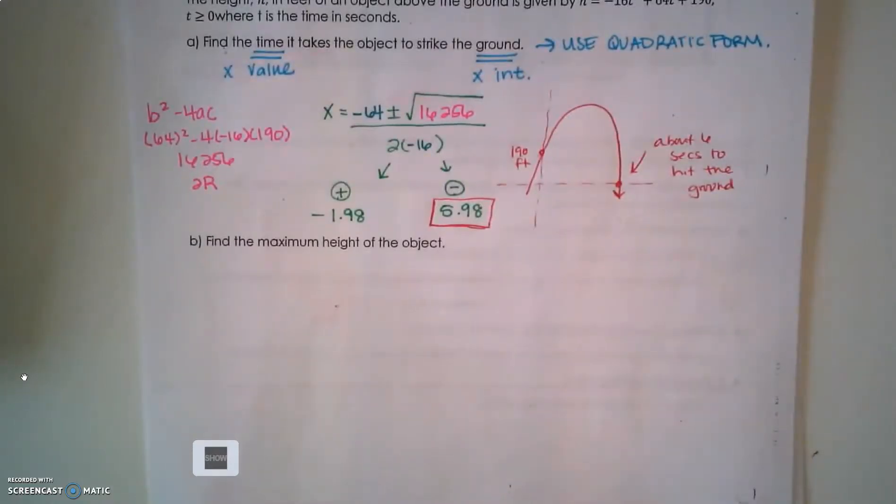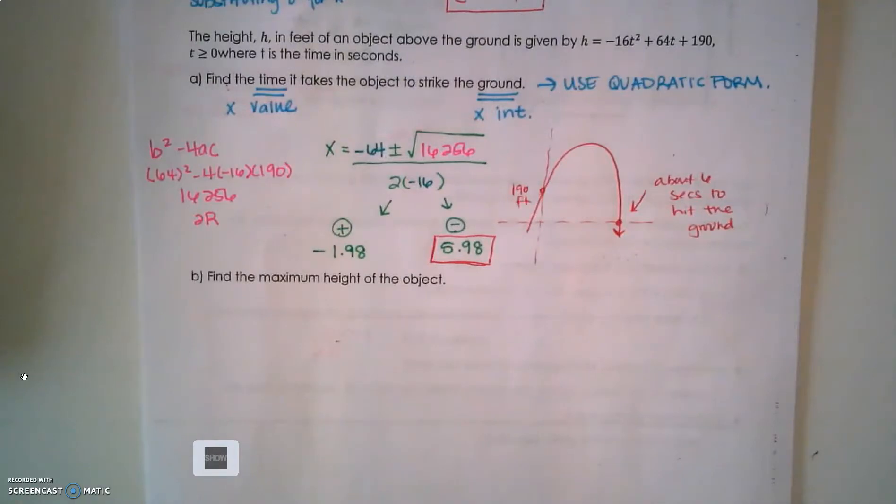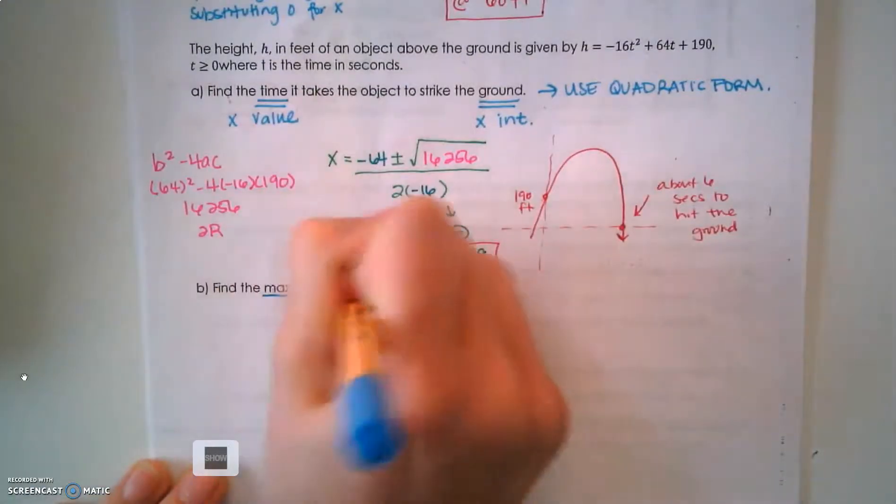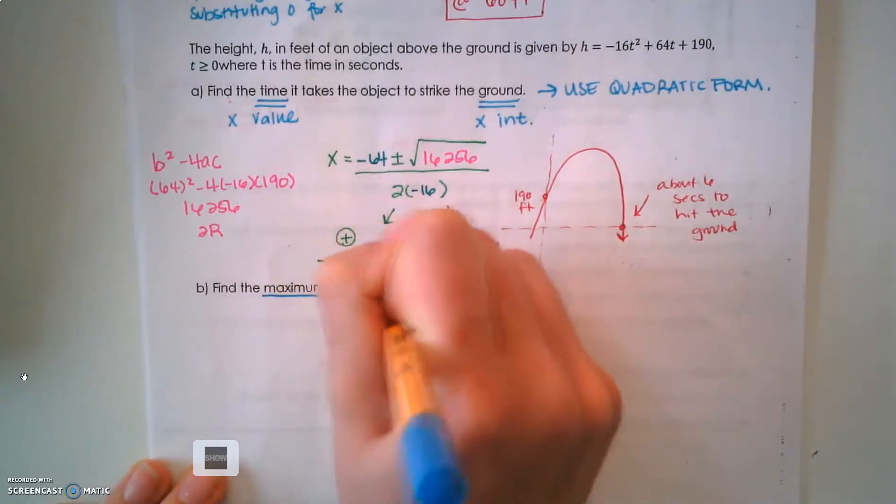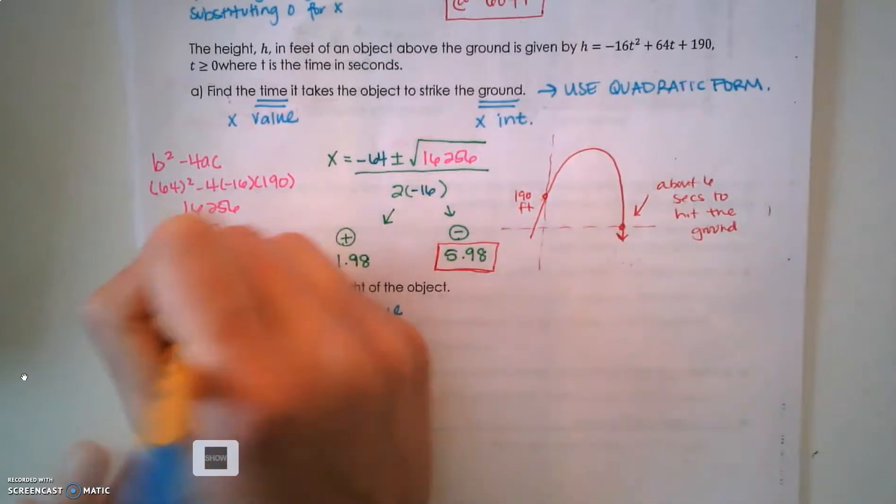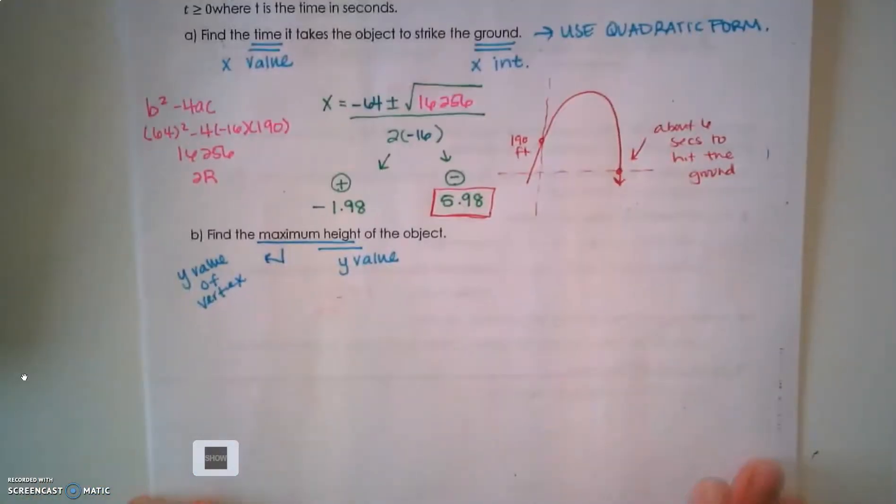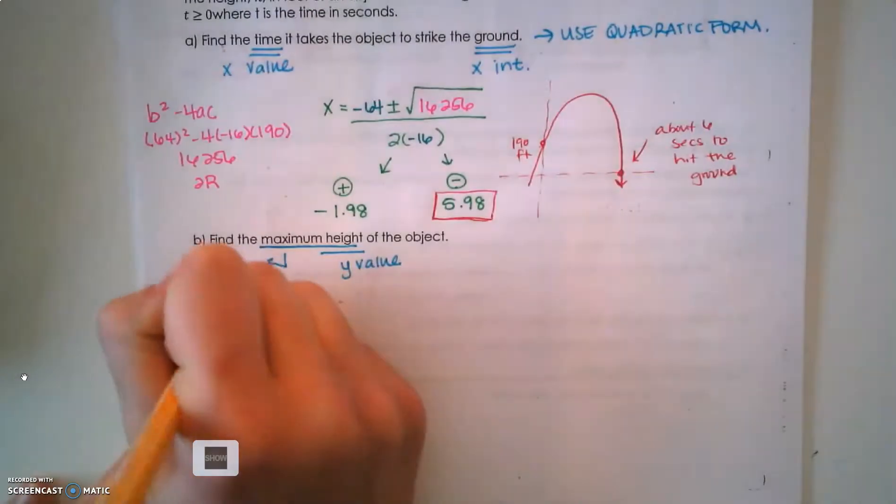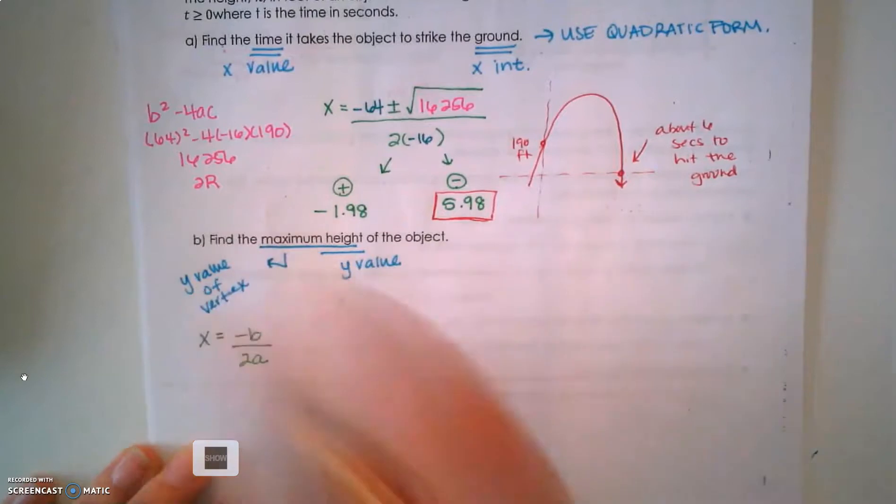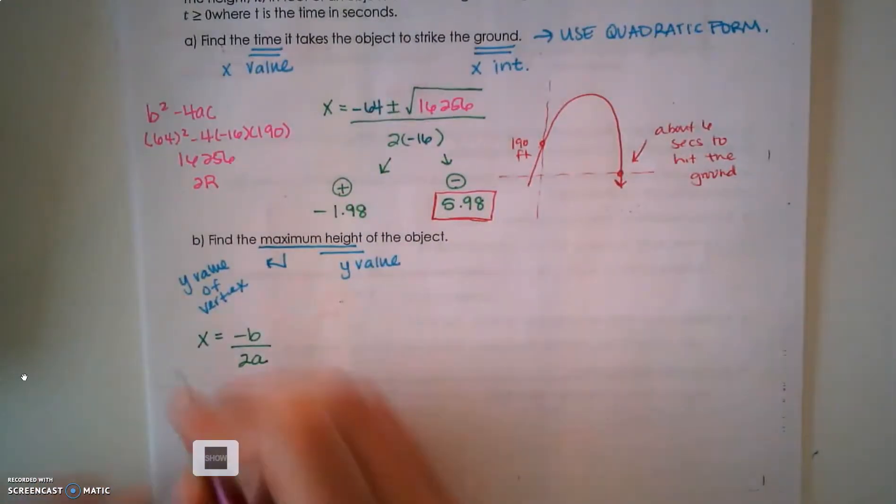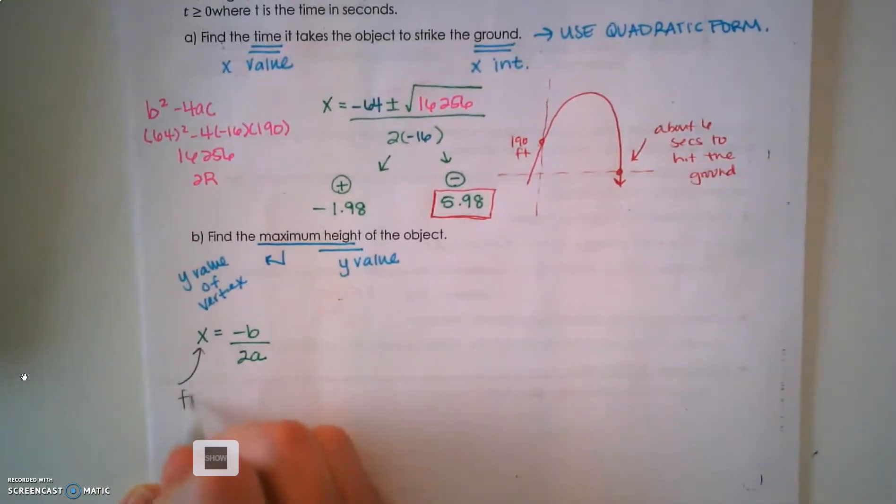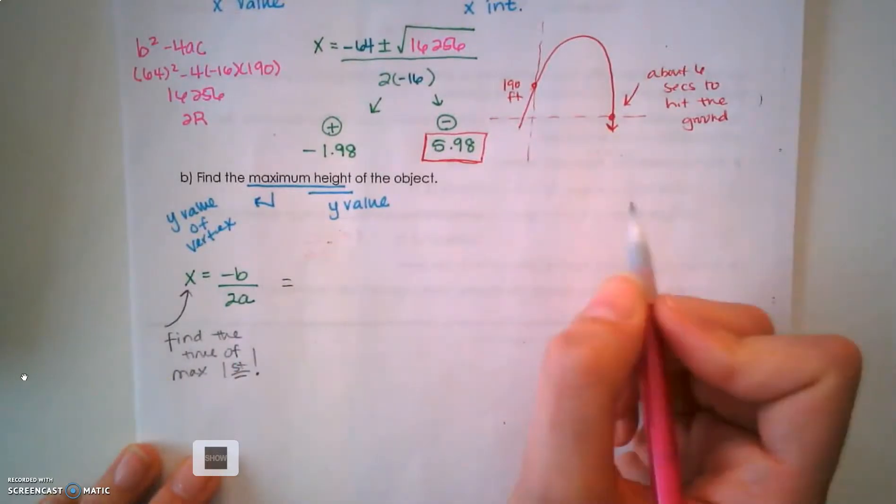Let's look at another example. Same problem, different type of question. It wants to know the maximum height. That word 'height' tells me I'm finding a y value, and maximum tells me I'm finding the y value of the vertex. I know a little vertex equation - x equals the opposite of b over 2a, but notice it says x. I have to find x first, so I'm going to find the time of the maximum first.